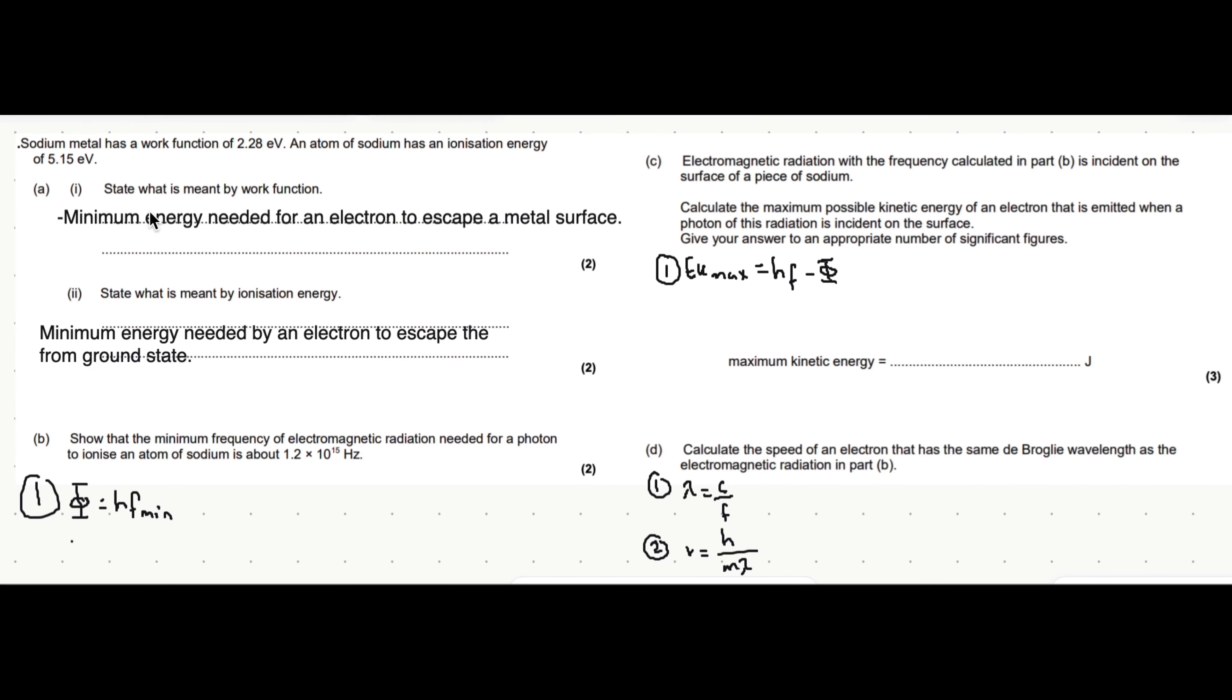In quantum physics, we're going to look at key definitions and equations. This problem gives you the work function of sodium and the ionization energy. Let's start with the definitions of work function and ionization energy. In mark schemes, for work function, the term minimum energy always comes up.